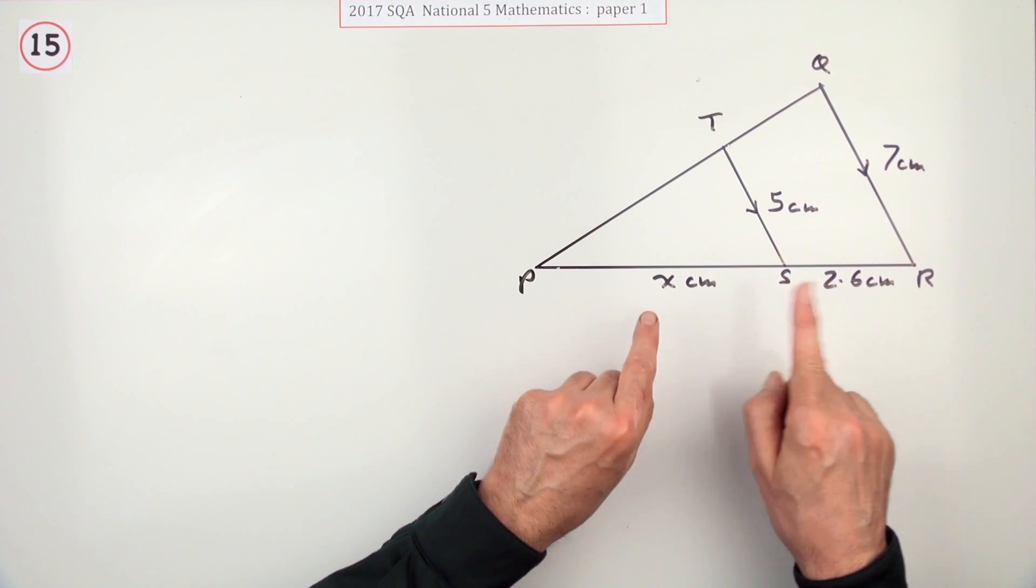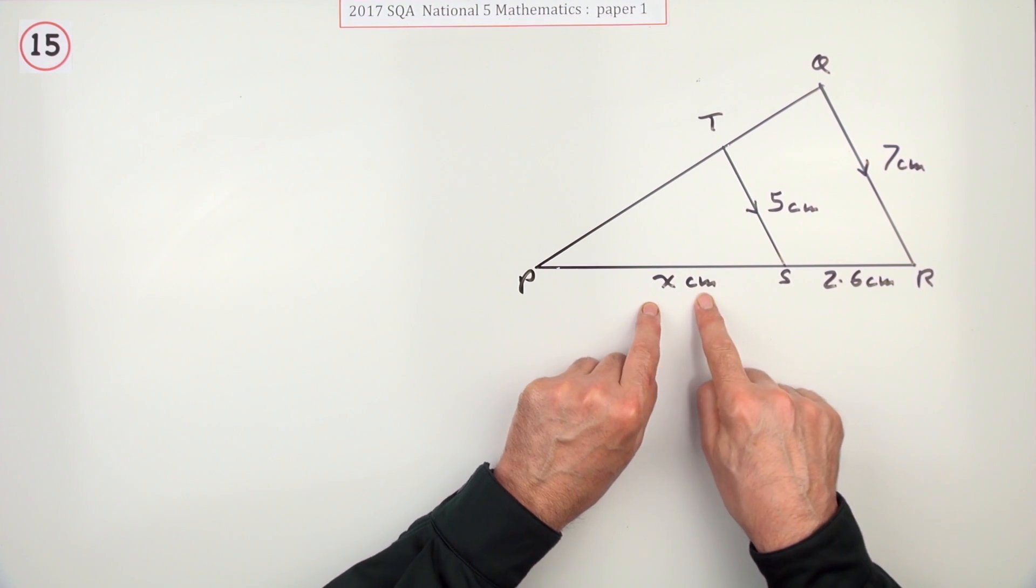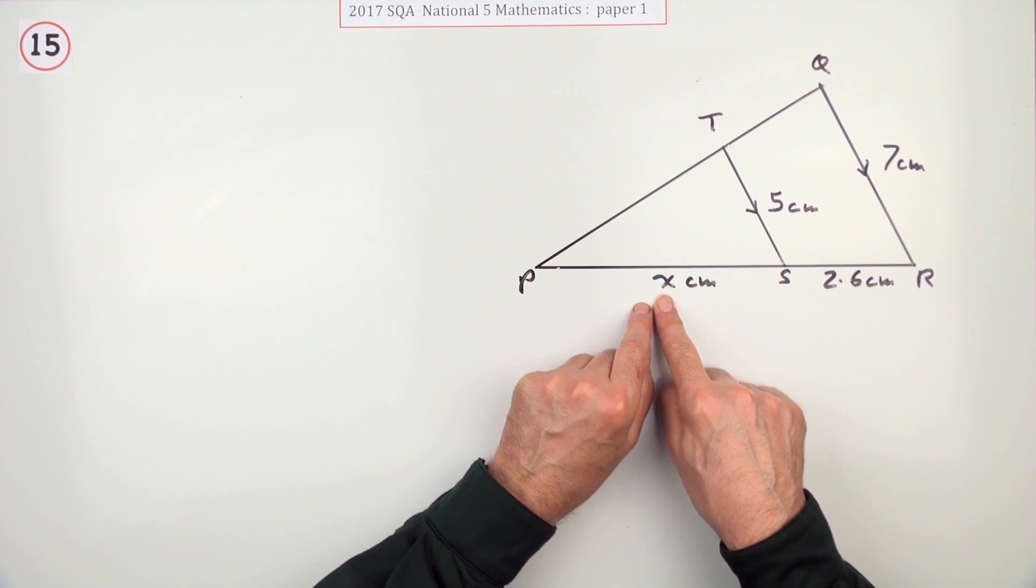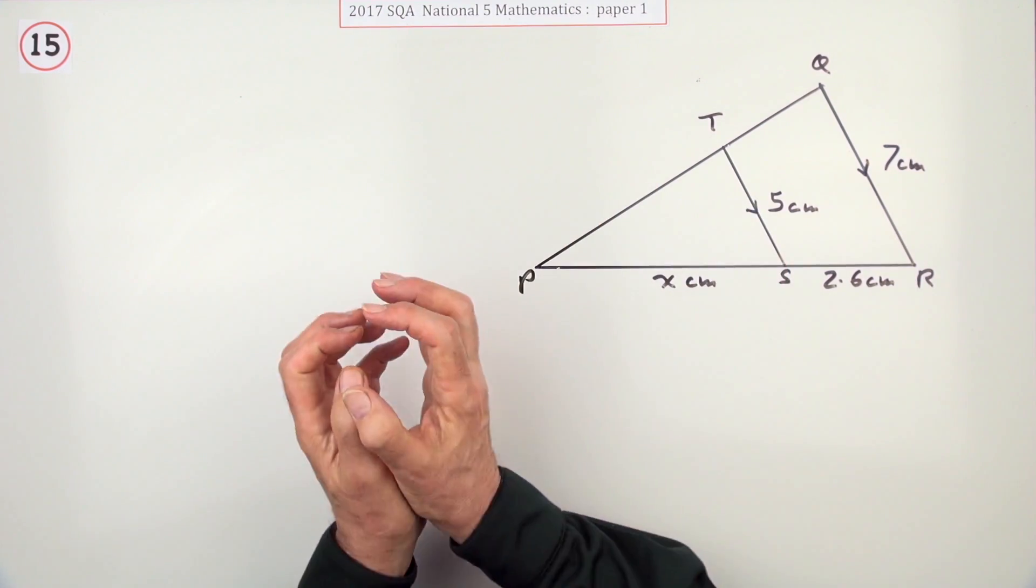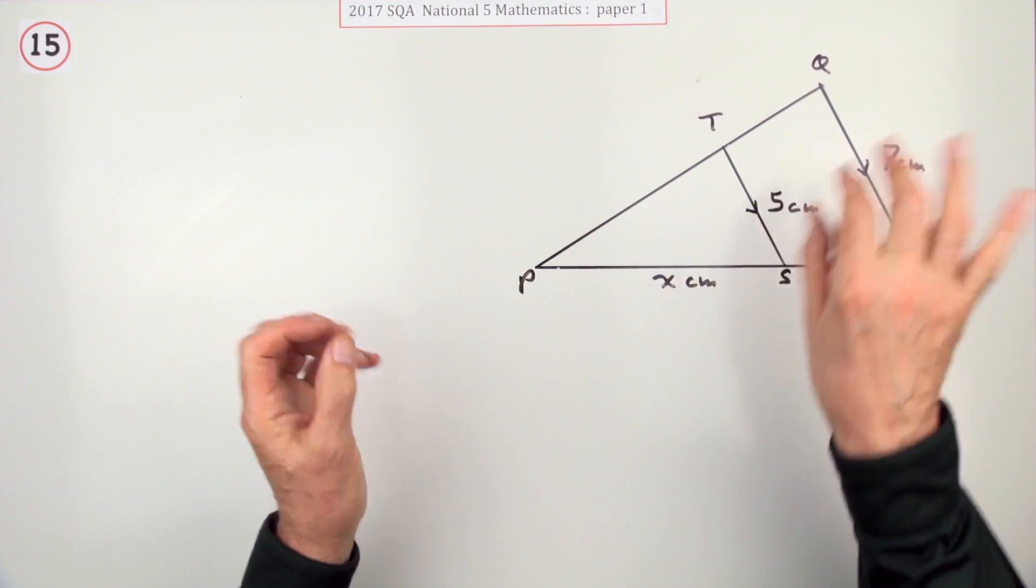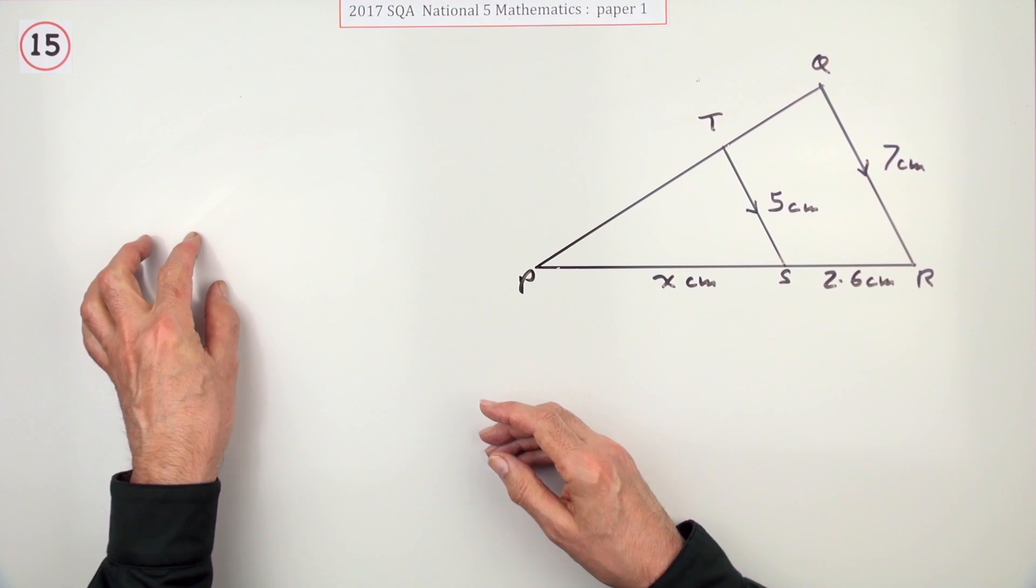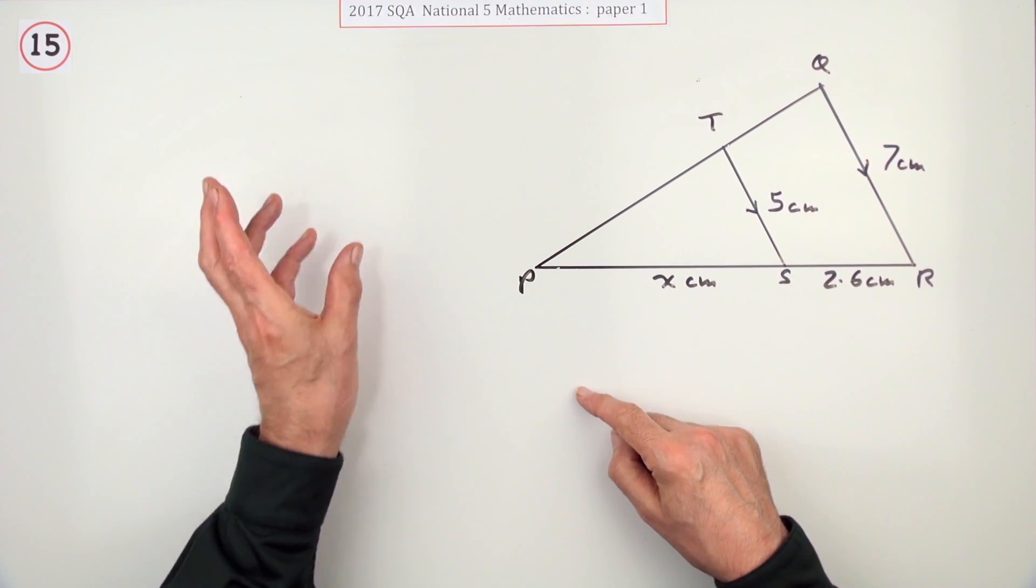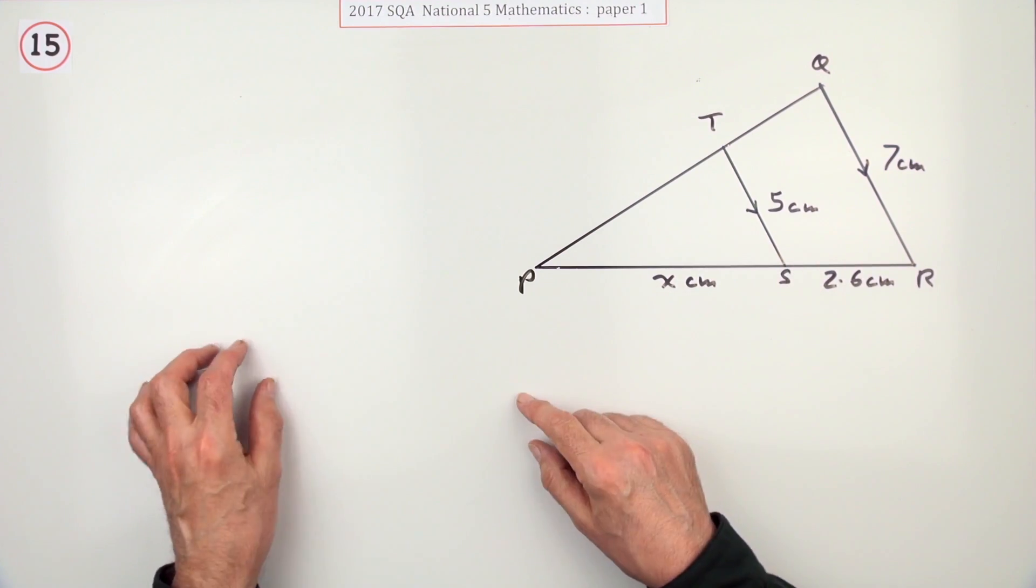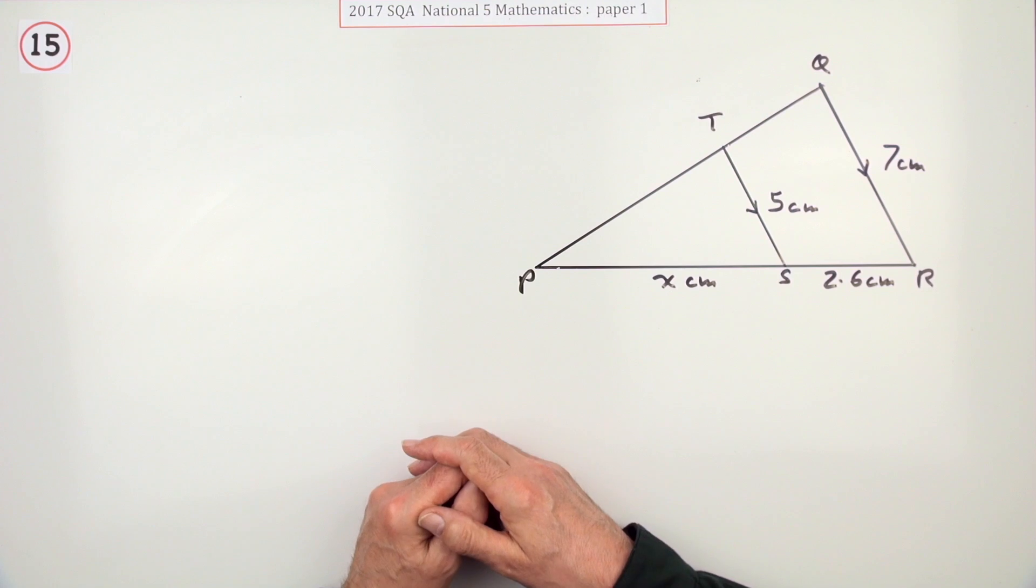There's a wee awkward thing about that. Notice how it says x centimeters. That means x is, strictly speaking, just a number. It's just the number of the centimeters. So your final answer should really just be x equals a number. You're probably just going to write x equals something centimeters. And they're not going to bother particularly about that.